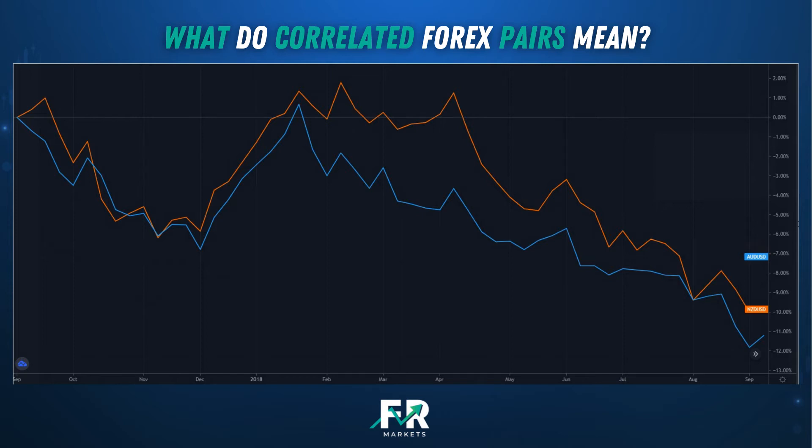You'll tend to see that some correlated Forex pairs will have a weaker or stronger relationship. This is because all these currencies are separate economies — they sell different things and affect the exchange rates in different ways.